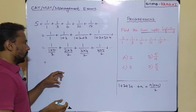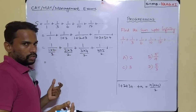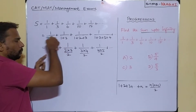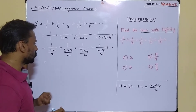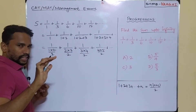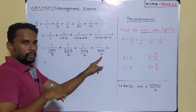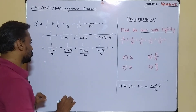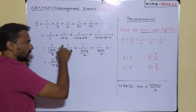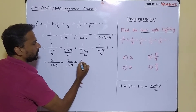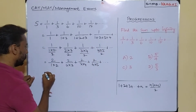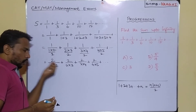Since the denominators are themselves fractions, we take the denominator's denominator (the 2) up to the numerator. This gives: 2/(1×2) + 2/(2×3) + 2/(3×4) + 2/(4×5) + and so on.